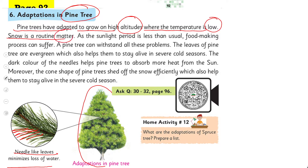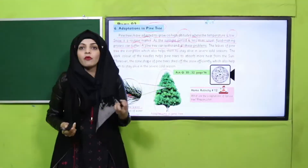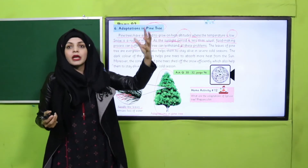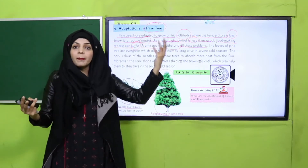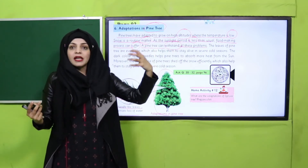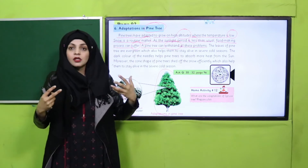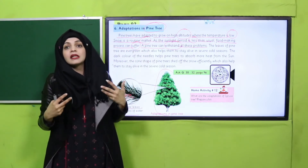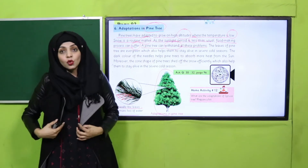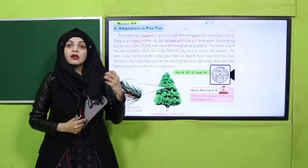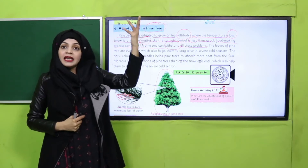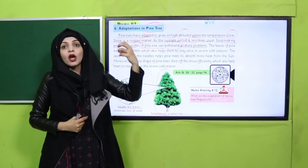In hilly areas, snow is a routine matter. As sunlight period is less than usual, the food-making process can suffer — but a pine tree can withstand all these problems. In hilly areas the cold is very intense, the altitude is very high, and there is a lot of snow. Pine trees are well adapted to survive in high altitude areas and can grow there comfortably.